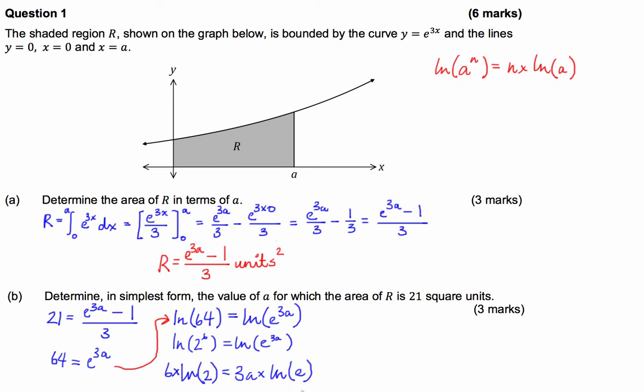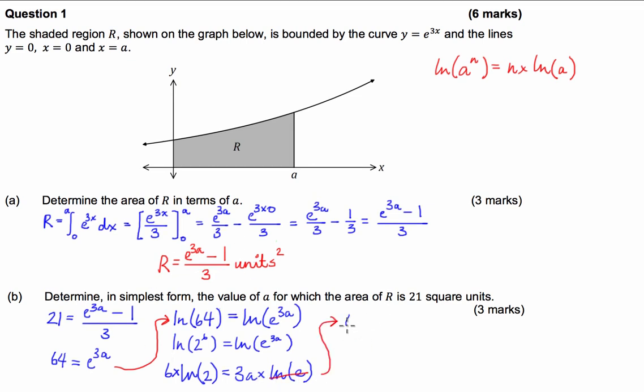Now ln of e is simply 1, so that will cancel out. And we're left with 6 ln 2 is equal to 3a. So therefore a is going to be equal to 6 over 3 times ln 2. 6 divided by 3 is 2. So we end up with a is equal to 2 ln 2.